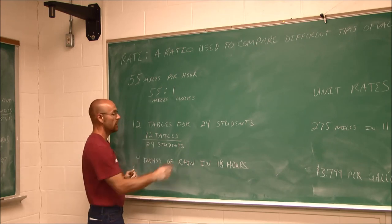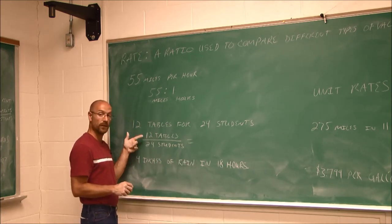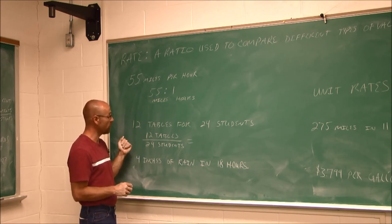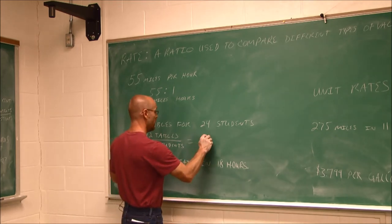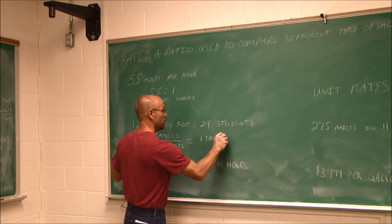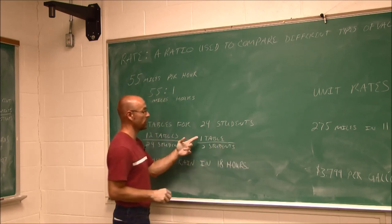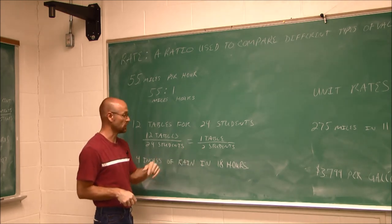But what I do recognize is I can reduce the coefficients here, the numbers. 12 to 24 would reduce, because 24 contains a factor of 12. 12 over 24 is 1 half. One table for two students. So now we know the units of how many tables we need for every two students. One table per two students.